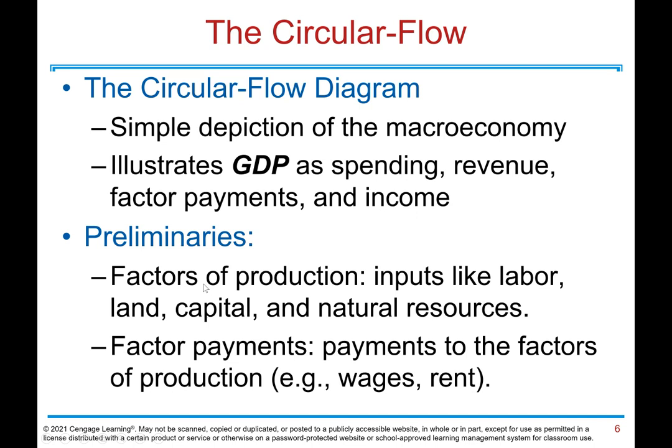Preliminaries: Factors of production are inputs like labor, land, capital, and natural resources. Factor payments are payments to factors of production — for example, wages and rent.